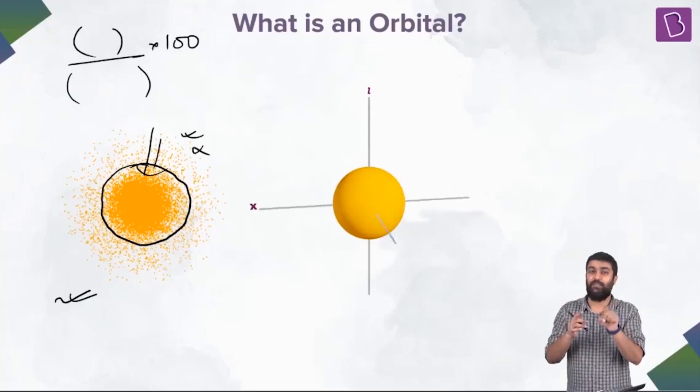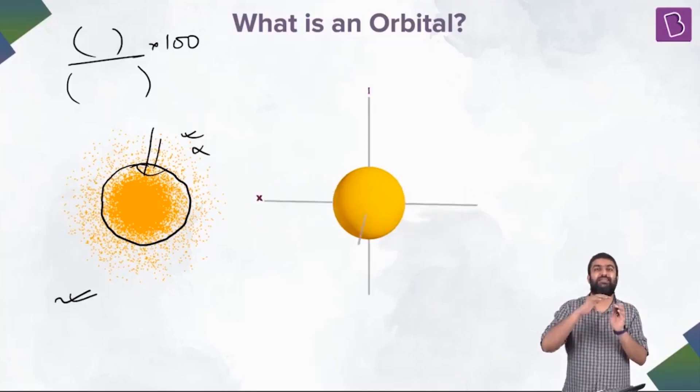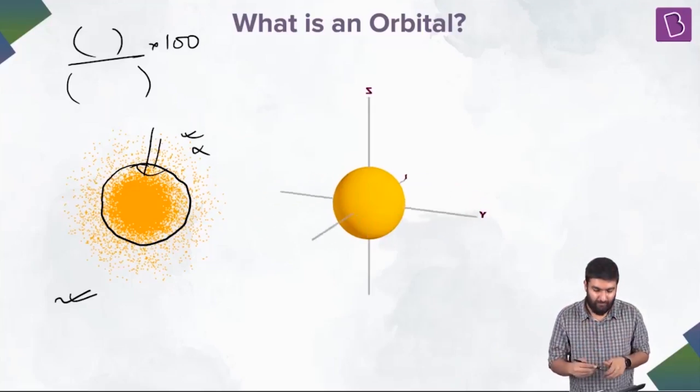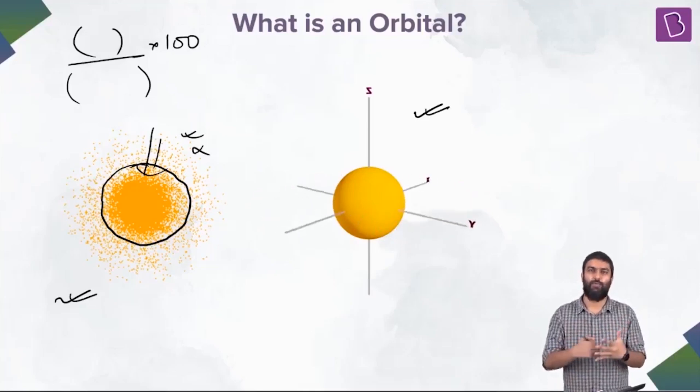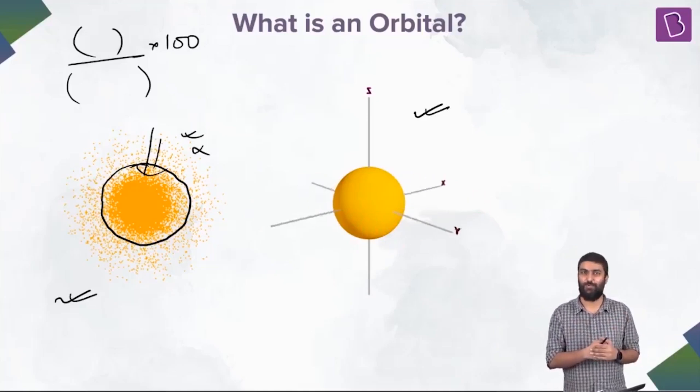Now, the term that I have been using wrongly till now is circle, because it is actually a spherical electron cloud. That is why we have this spherical orbital being denoted over here. So, this is what we have.